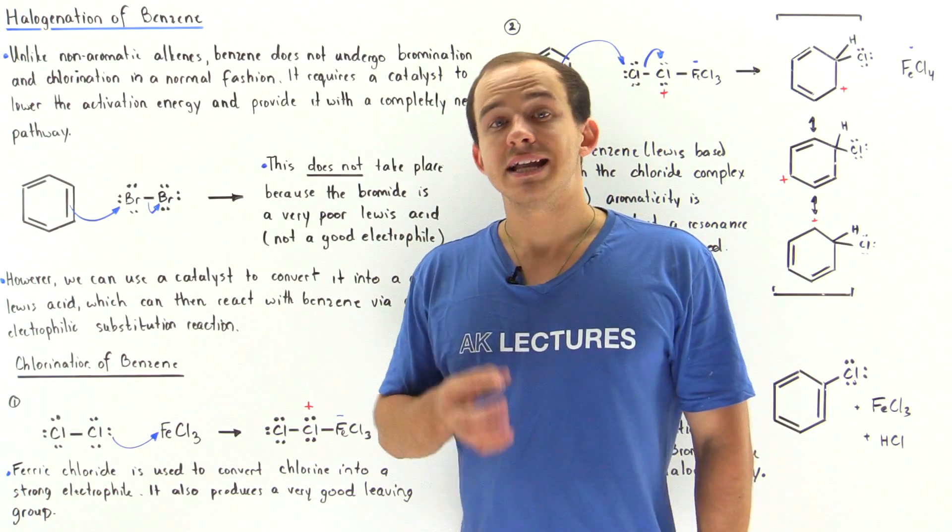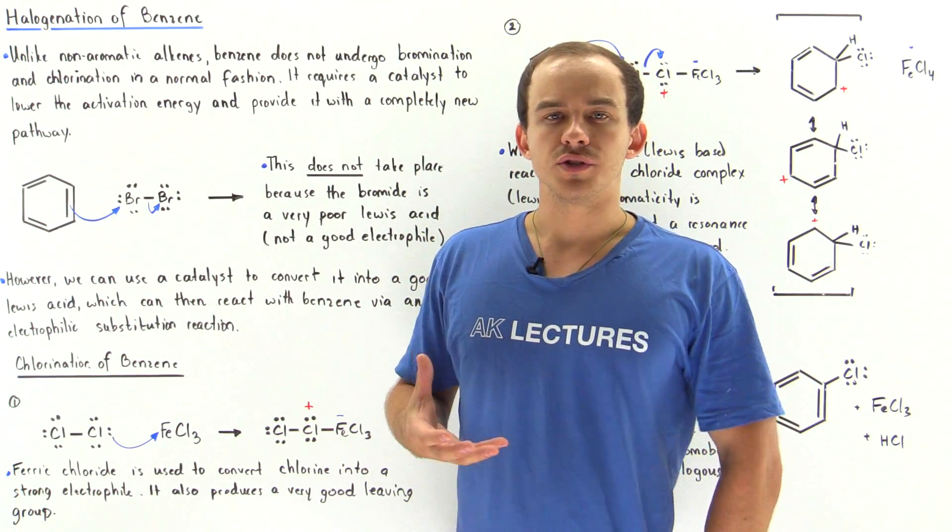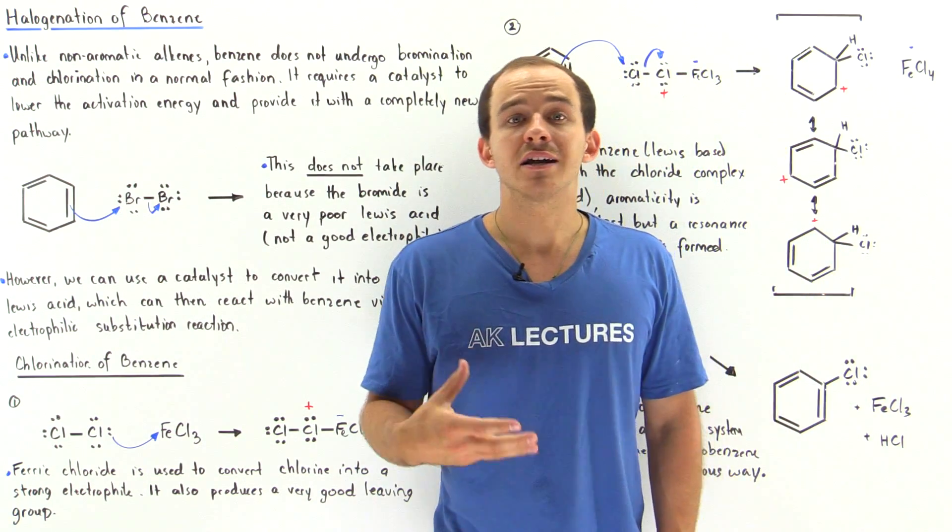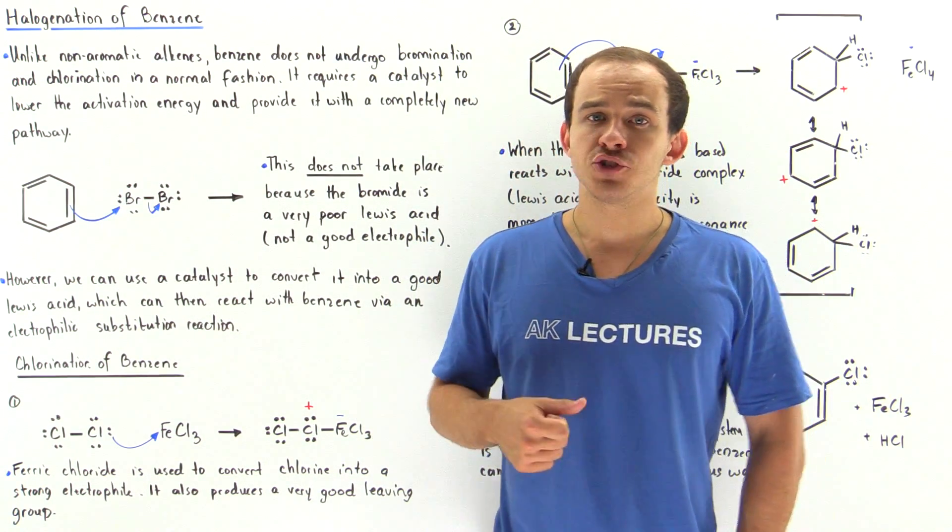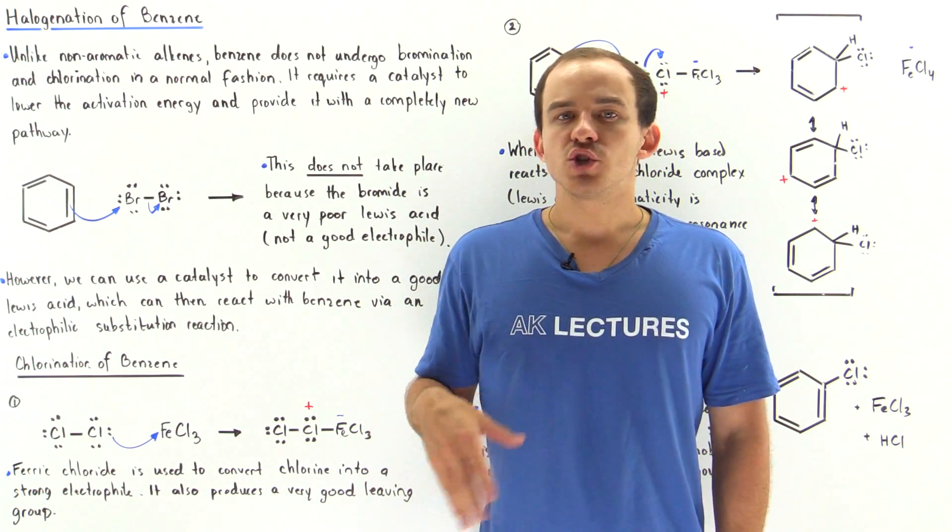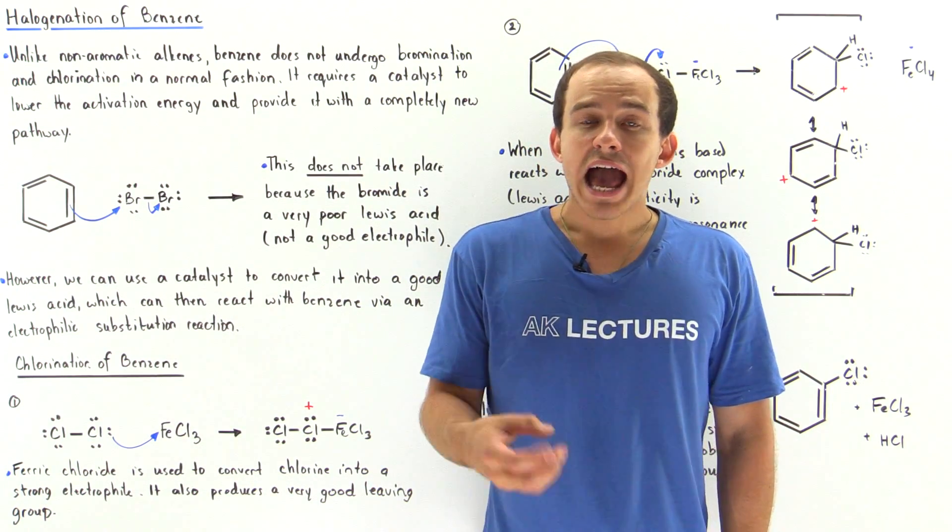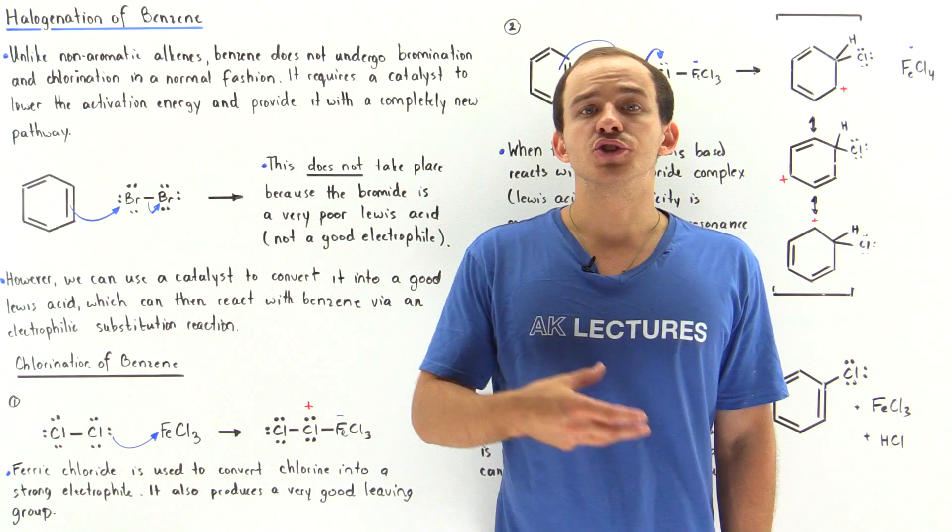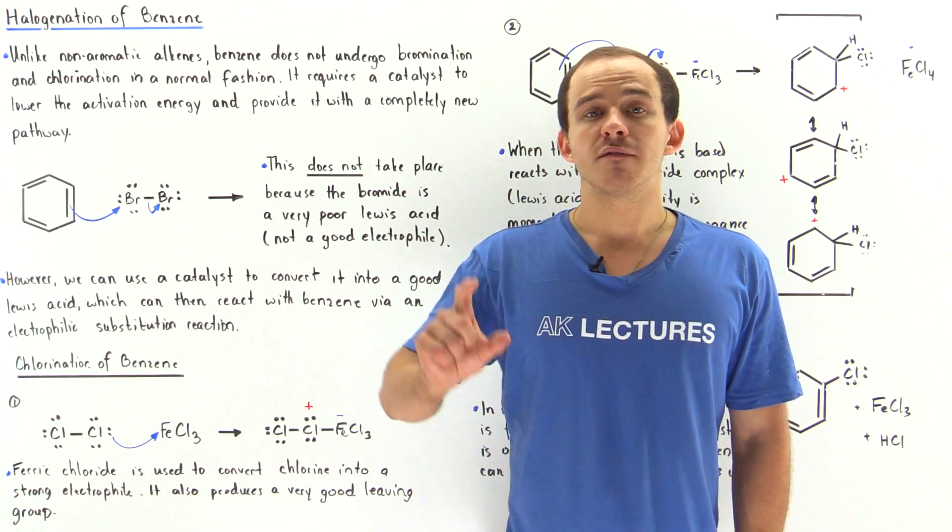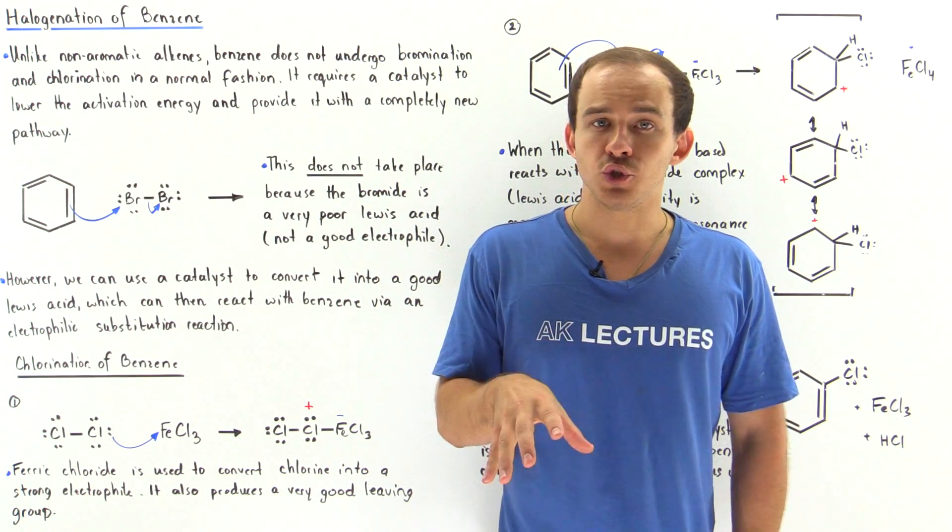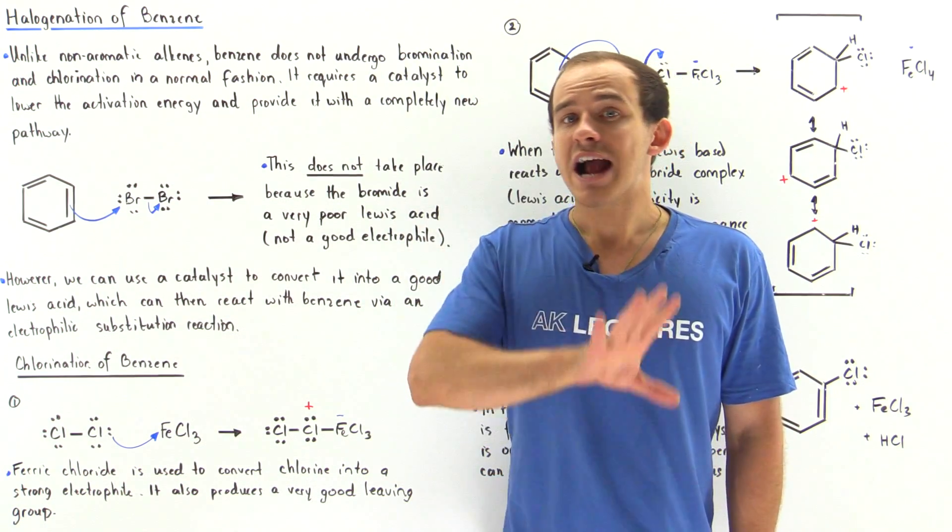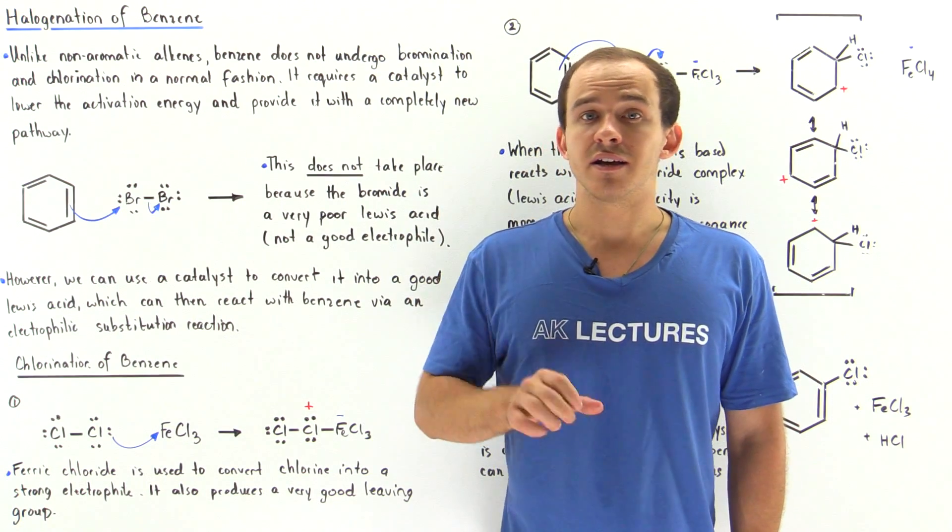Unlike simple alkenes and non-aromatic molecules, benzene, which is an aromatic compound, does not undergo halogenation reactions in the same way that simple alkenes do. If we want our benzene to undergo a bromination or chlorination reaction in which one of the H atoms is substituted with a chlorine or bromine while keeping the aromatic benzene ring intact, we have to use a catalyst.